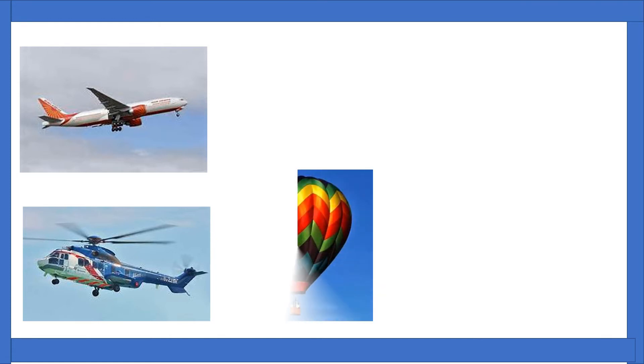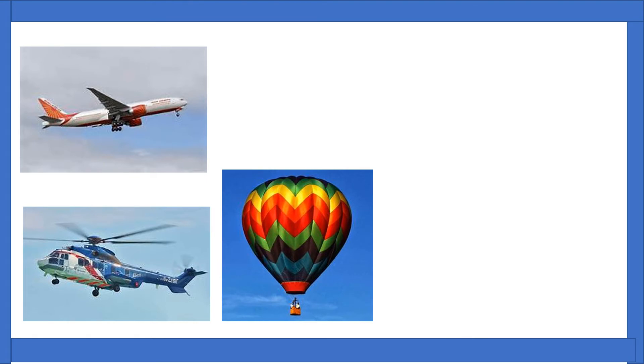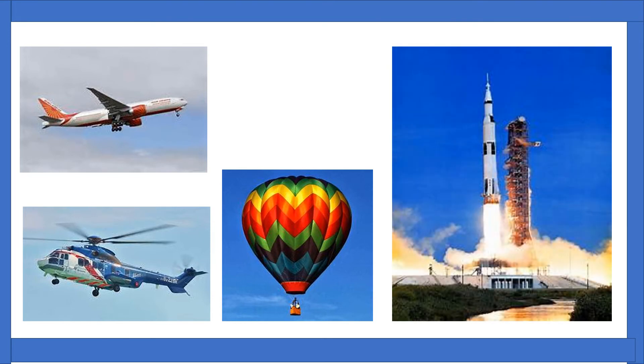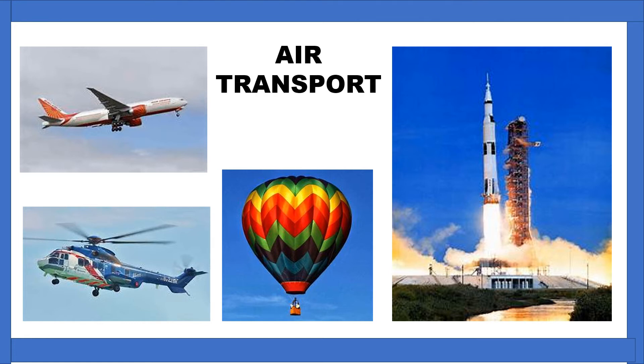Aeroplane — aeroplanes are used to travel very long distances and it is the fastest means of transport. A helicopter carries only a few people at a time. Hot air balloons are usually used for recreational purposes or for enjoyment. And finally, a rocket — rockets are used for space exploration. Aeroplanes, helicopters, hot air balloons, and rockets are examples of air transport.